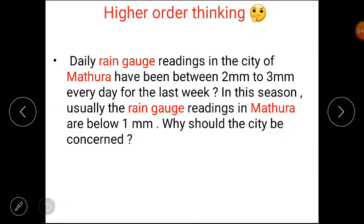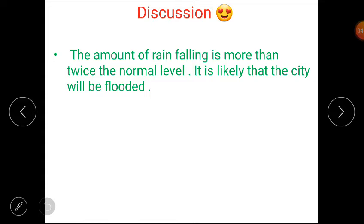Now it's time for a higher order thinking question. Daily rain gauge readings in the city of Mathura have been between 2 mm to 3 mm for the last week. Usually in this season, the rain gauge reading in Mathura is below 1 mm. Why should the city be concerned? The amount of rain falling is more than twice the normal level, so it is likely that the city will be flooded.